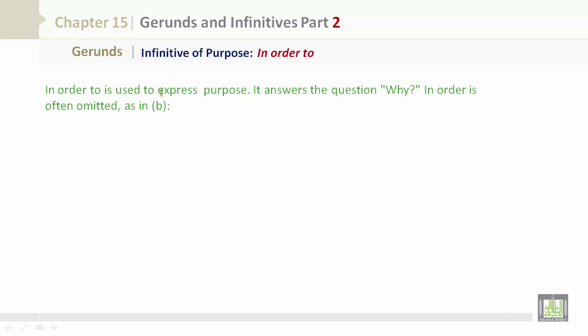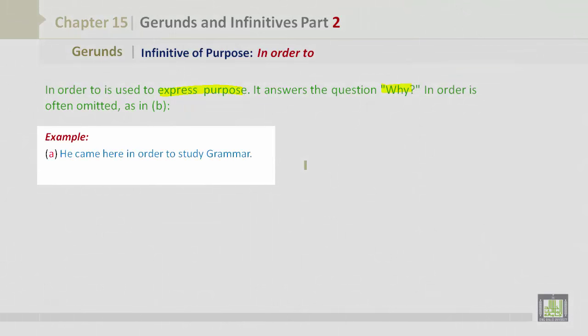In order to is used to express purpose. It answers the question why. In order is often omitted, as in Example B. Let's look at examples. Example A: he came here in order to study grammar. B: he came here to study grammar.